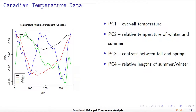The fourth FPC is the remaining curve, which is positive in the summer, negative in the spring and fall, and positive again in the winter. So I interpret this as the change of temperature between summer and winter compared to the spring and fall.